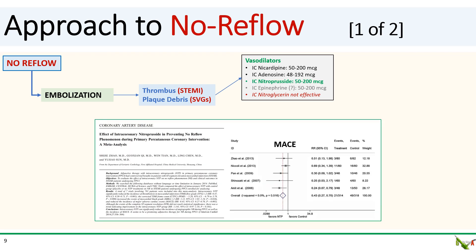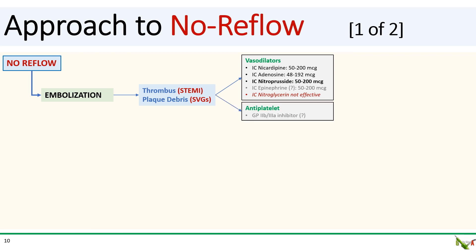I am particularly fond of IC nitroprusside, which I have found to be very effective in reversing no reflow. There is a meta-analysis suggesting that IC nitroprusside may be effective in reducing MACE compared to non-nitroprusside agents. In cases of especially severe no reflow, you might need to infuse the medications via a distal microcatheter — if you just infuse it through the guide, the medication may not actually reach the distal vasculature. I will generally add a glycoprotein 2b3a inhibitor in a no reflow situation to reduce the likelihood of forming microvascular plugs of platelets.